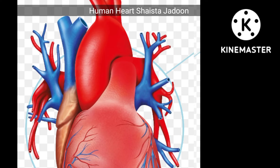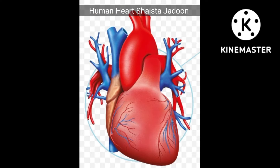In this tutorial we will learn about the anatomy of the human heart. The human heart is a hollow muscular organ. It looks like a human fist. The weight of the human heart is around 500 grams. It is situated in the chest cavity and slightly turned to the left side of the human body.